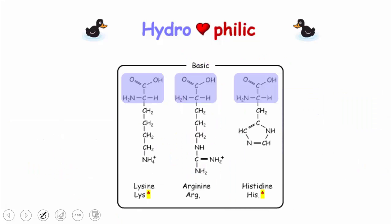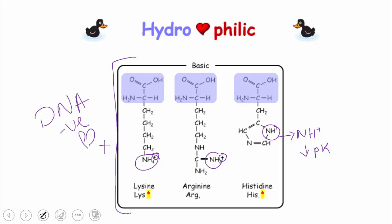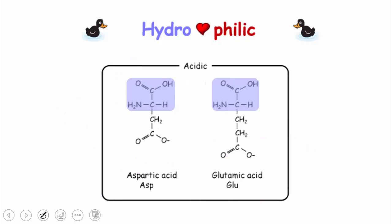The second group under the water-loving amino acids are the basic positively charged group. And those are the lysine, arginine, and histidine. They are all characterized by having a positively charged amine group. And the common thing about all of those is that they are attracted to negative charge. And specifically, the DNA is very negatively charged. And that's why you will find that those three amino acids are highly involved with the DNA structure. The third and last group under the hydrophilic are the acidic negatively charged groups, that are characterized by having a negatively charged carboxylic acid.